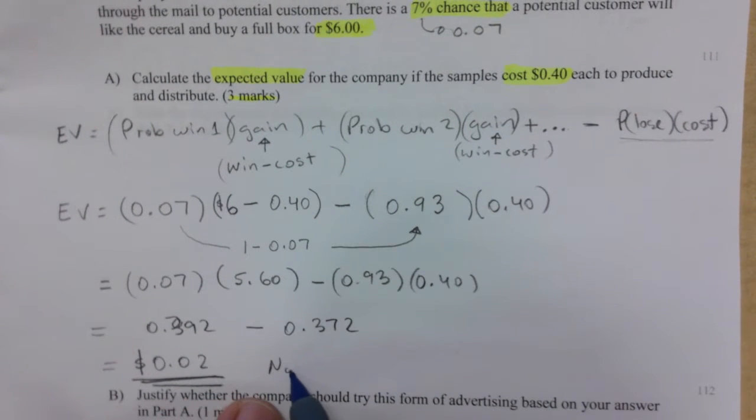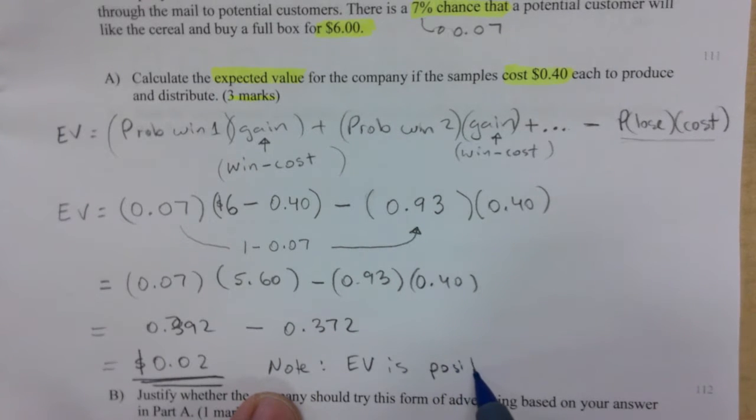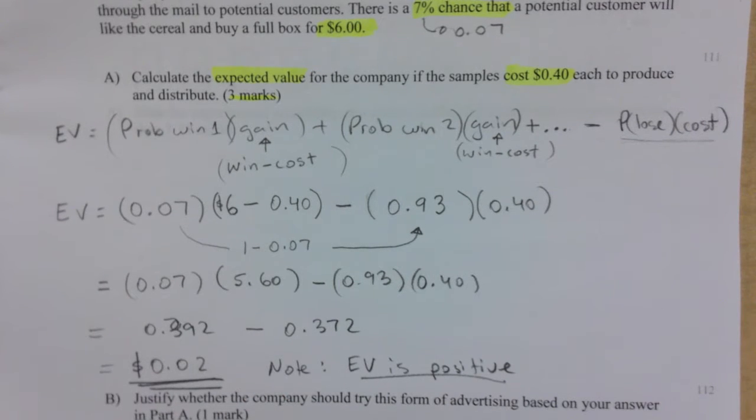Do not round when you're doing these calculations. So you go 0.392 minus 0.372. And you can tell that it's gonna be 0.02. And this is always in dollars. Your final answer is always in dollars. So note, expected value is positive.